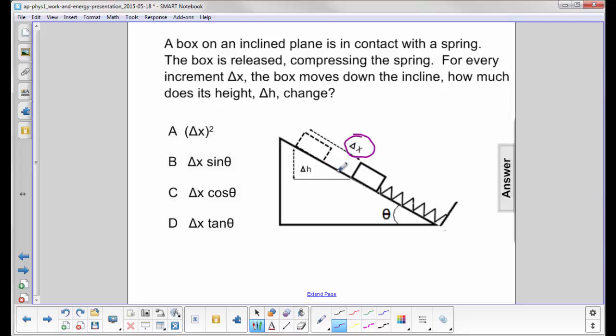First thing we have to do is find this angle right here. Now we have a diagonal line here and we have two horizontal lines. So by the law of alternate interior angles, this angle right here is the same as the angle of the incline, or theta.